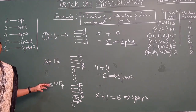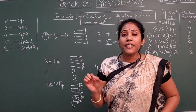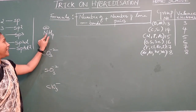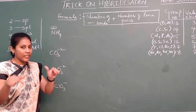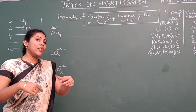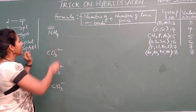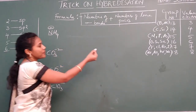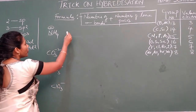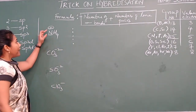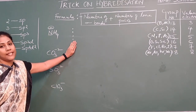Now let us check hybridization for ions. For the ammonium ion NH4+, concentrate on the charge. If plus is there, you remove one electron from the valence electrons. If minus is there, you add one electron. The central atom is nitrogen, belonging to group 15 with 5 valence electrons — put 5 dots. Since there is a plus charge, cancel out one electron.